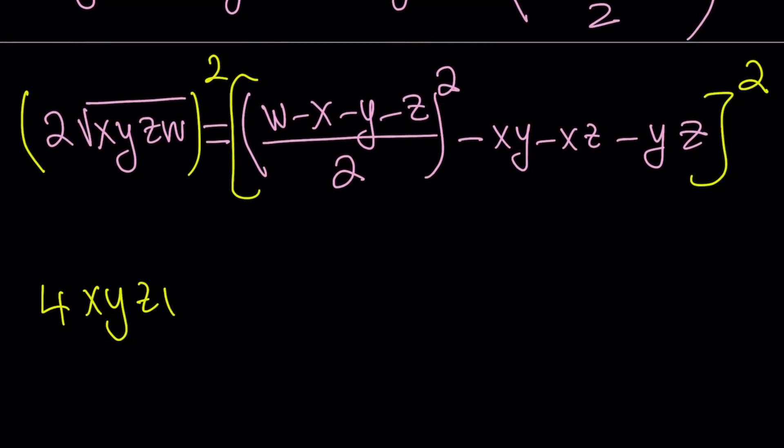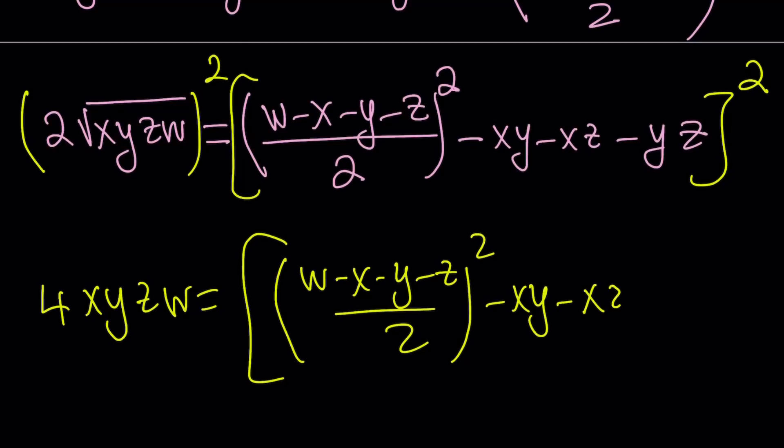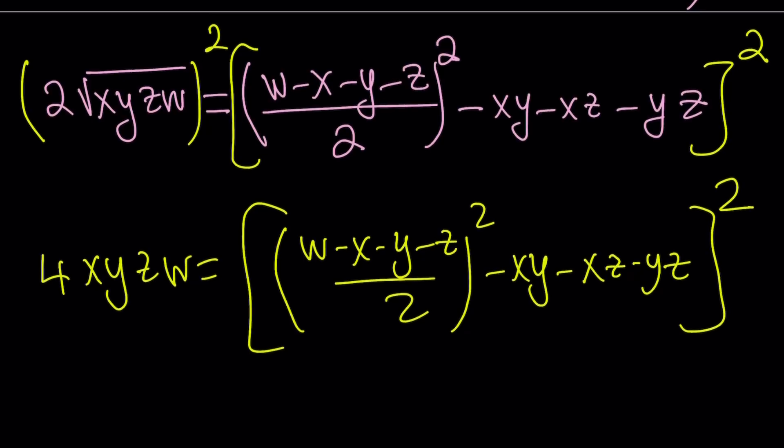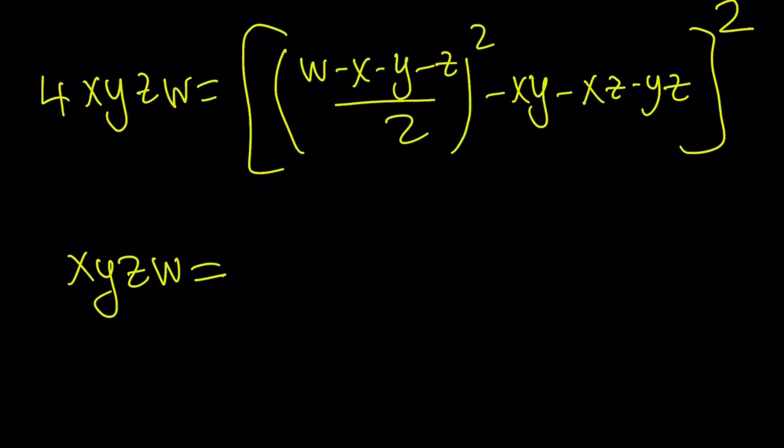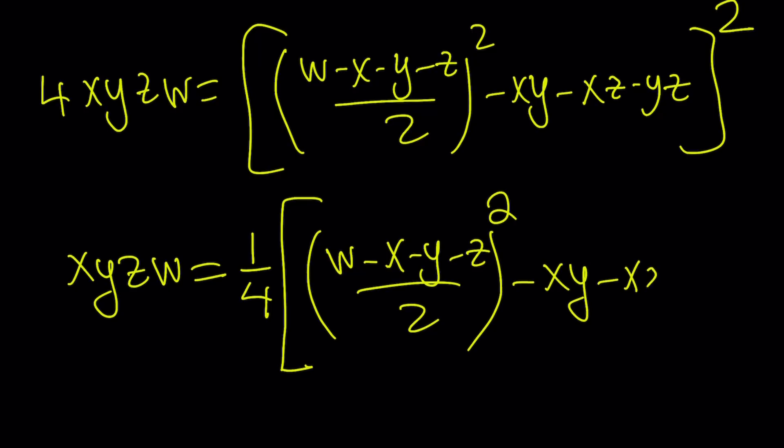And that's going to give us the following: 4xyzw is equal to [(w minus x minus y minus z) divided by 2 squared minus xy minus xz minus yz] squared. And now, if I multiply both sides by one-fourth or divide both sides by 4, then I'm going to get the answer. We're going to get rid of all the radicals. We already did. I want to leave the xyzw. So I'm going to multiply both sides by one-fourth, and that is going to equal this expression right here. And this means that we got rid of all the radicals.